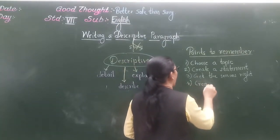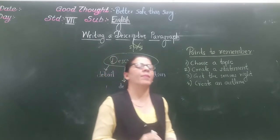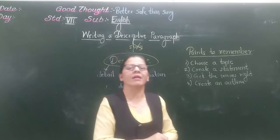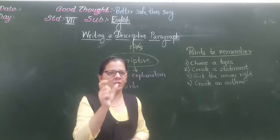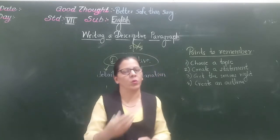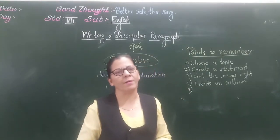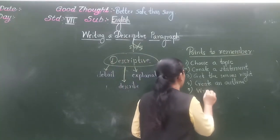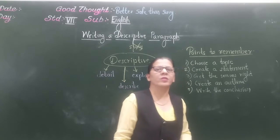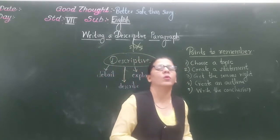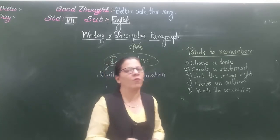Next is to create an outline. While writing any paragraph, first you need to create an outline. Without an outline, you cannot directly write the paragraph. With the help of an outline, then you can write the paragraph. Next is to write the conclusion — restate your topic, which will be the last sentence of your paragraph, concluding or ending your paragraph.